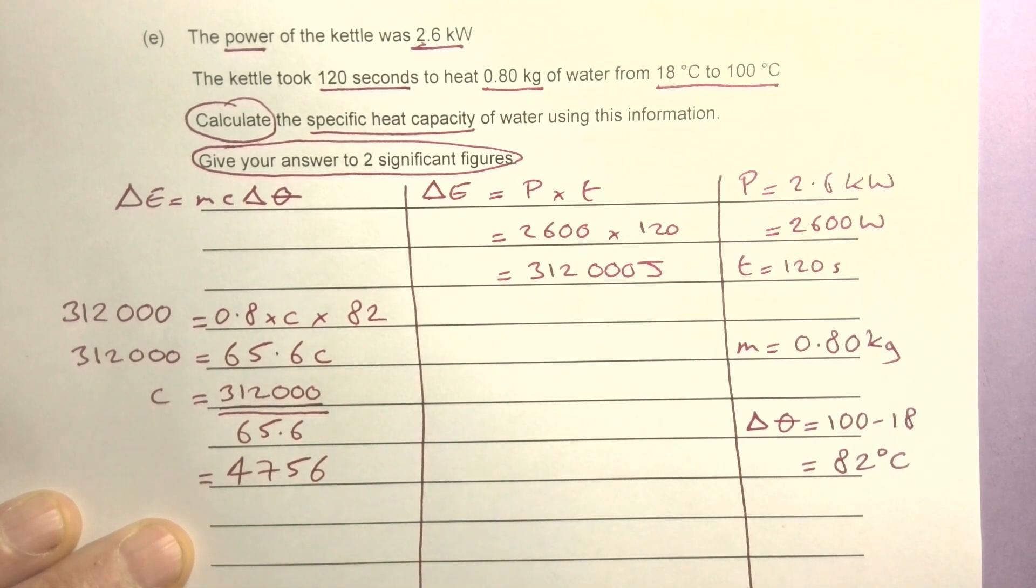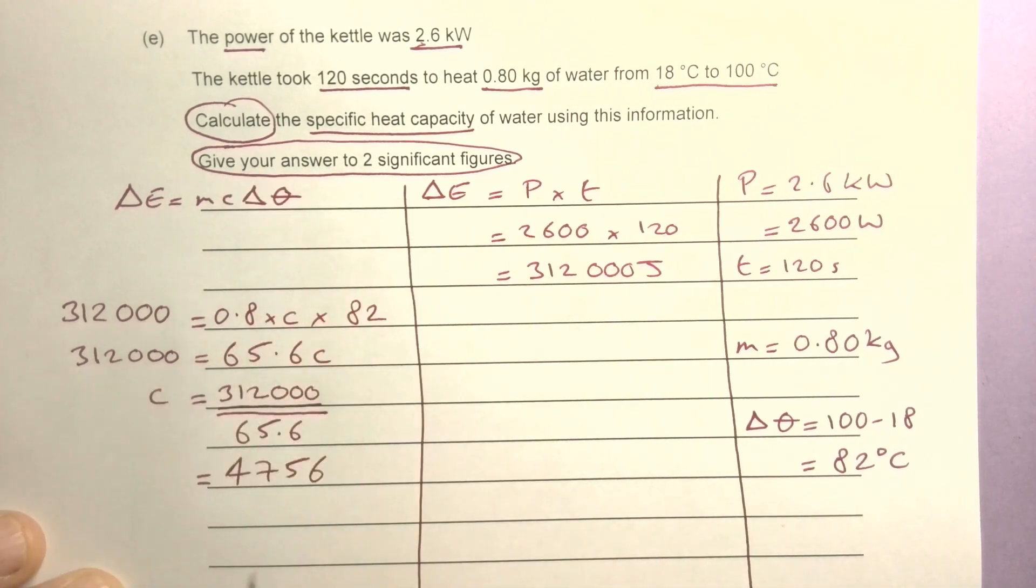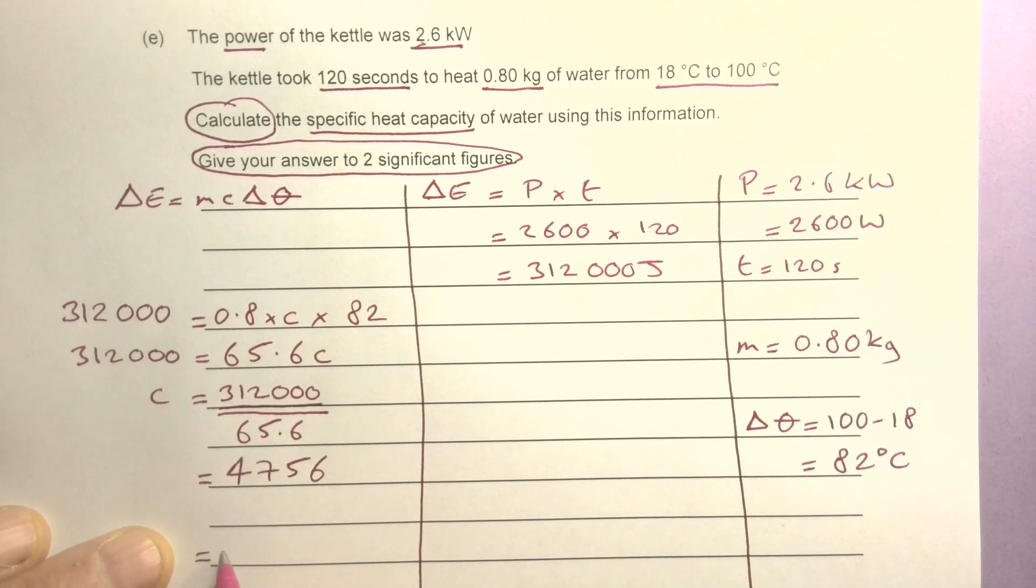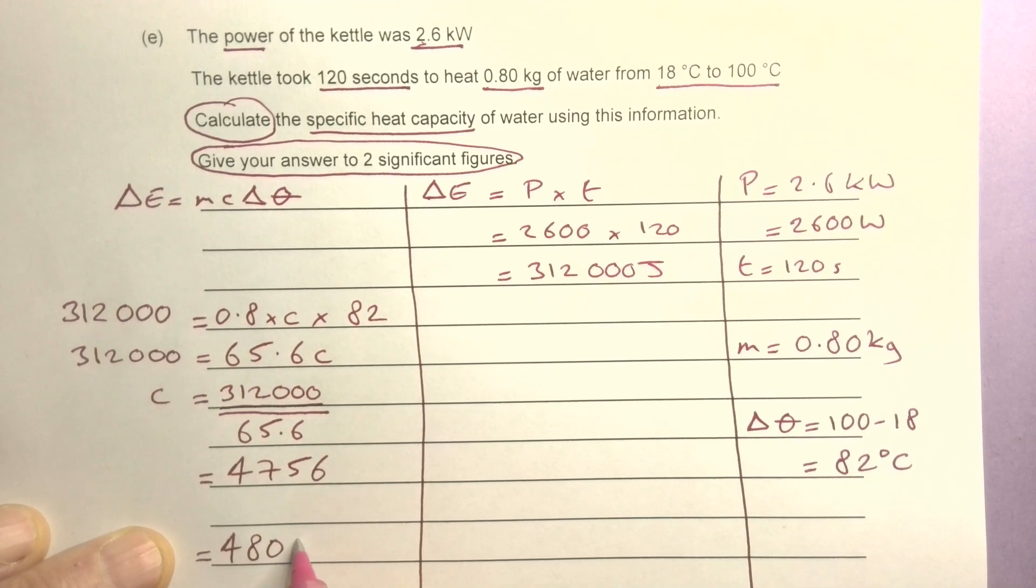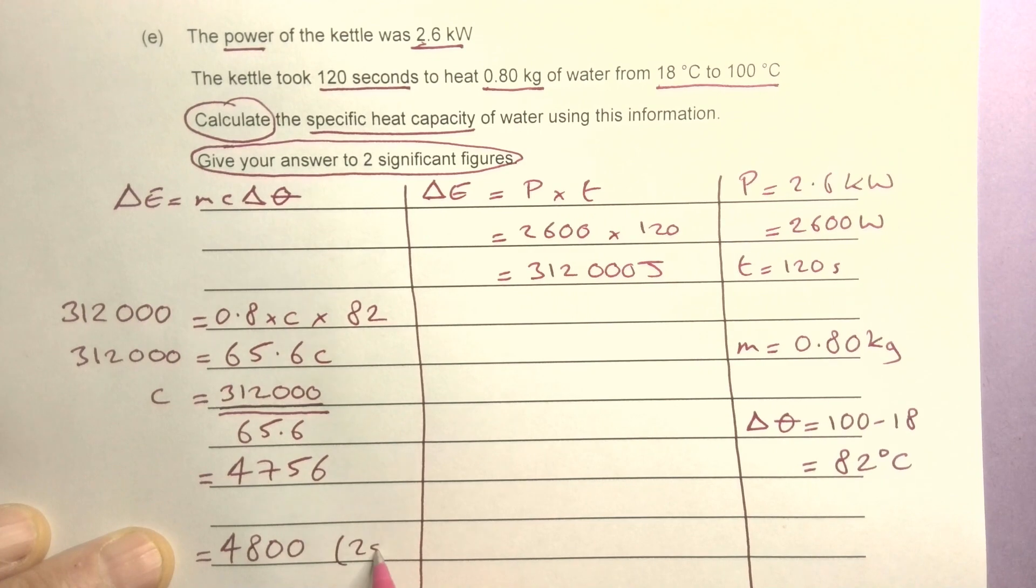I've got the units already there, but I need to give it to two significant figures, which equals 4,800 to 2 sf.